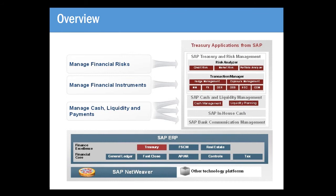In order to fulfill the third financial goal of managing cash flows, liquidity, and payments, SAP Financial Supply Chain Management has other modules such as SAP Cash and Liquidity Management, SAP In-House Cash, and SAP Bank Communication Management. These modules work closely with SAP TRM. For example, Cash and Liquidity Management shows users when excess funds will be available, so they can make a decision to invest the excess funds in order to optimize cash flows.